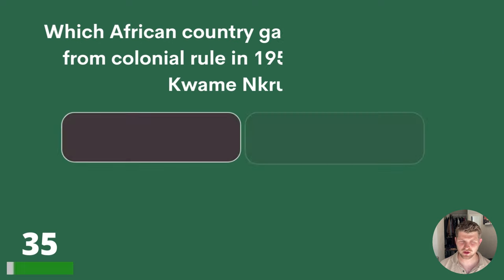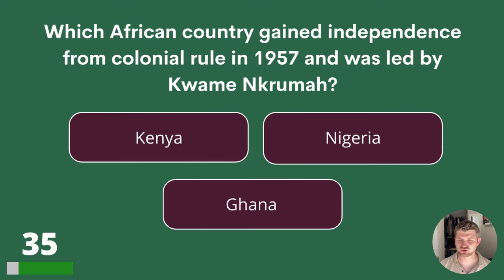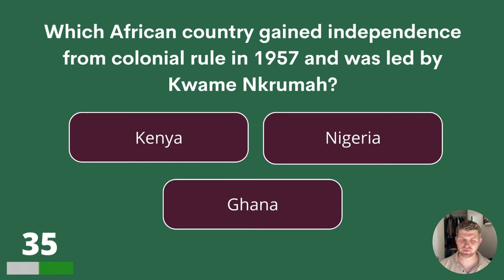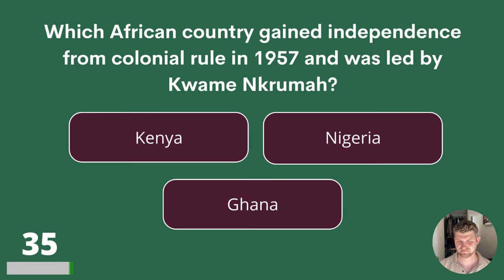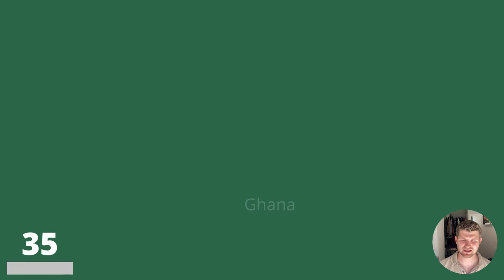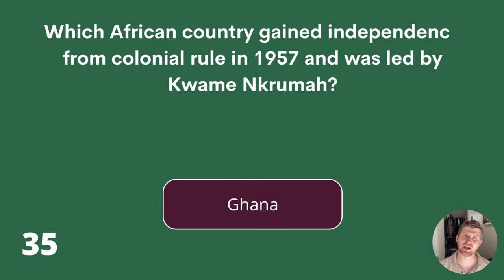Question 35. Which African country gained independence from colonial rule in 1957 and was led by Kwame Nkrumah? Kenya, Nigeria or Ghana? The answer is Ghana.